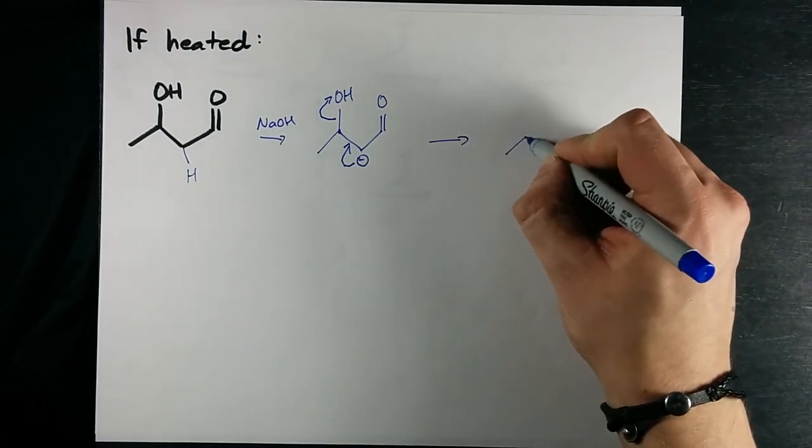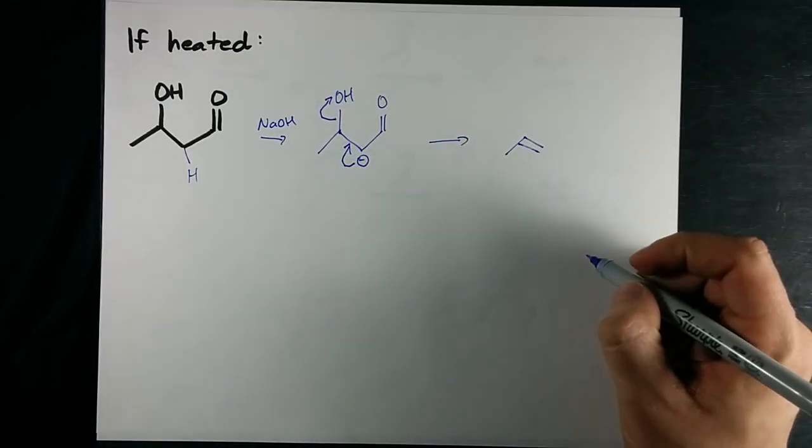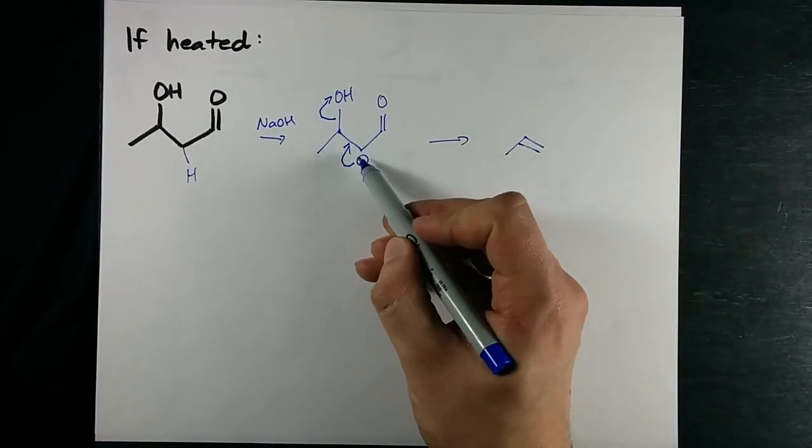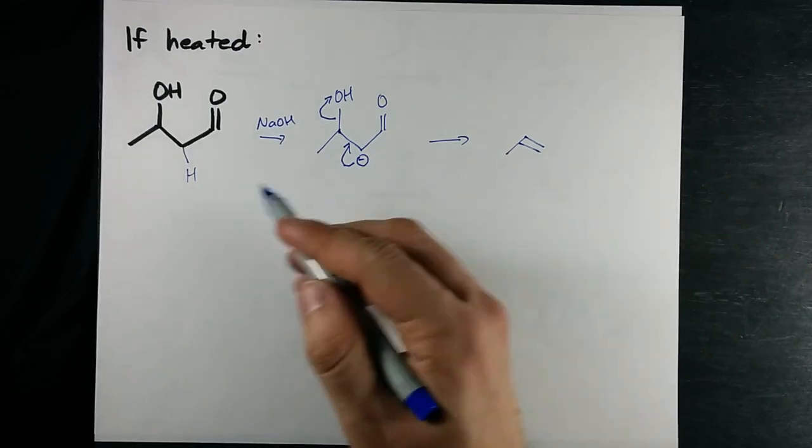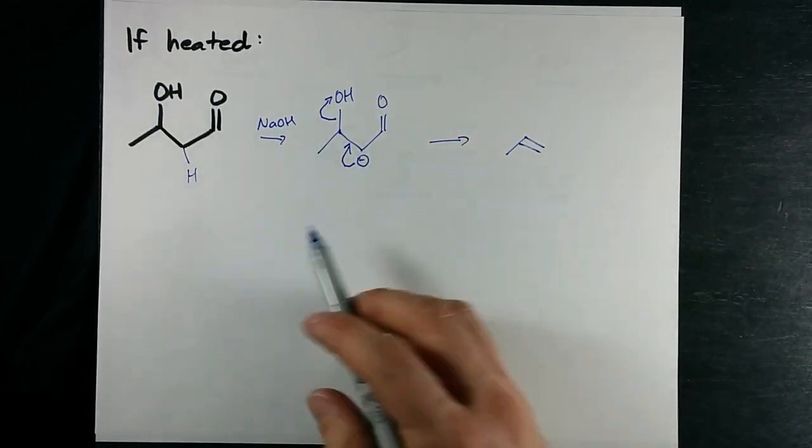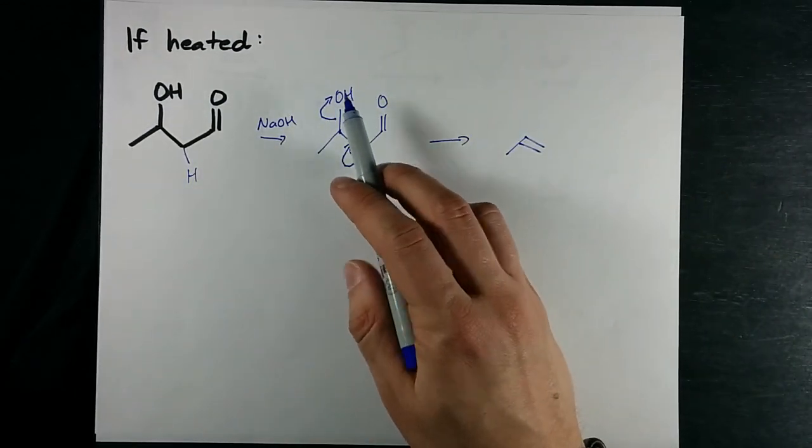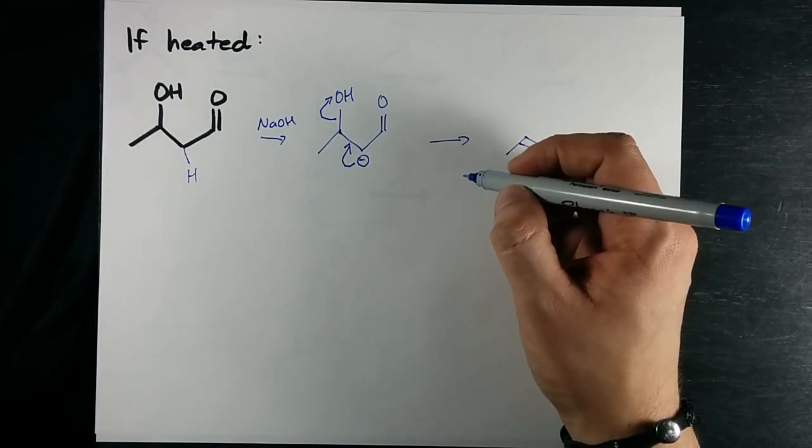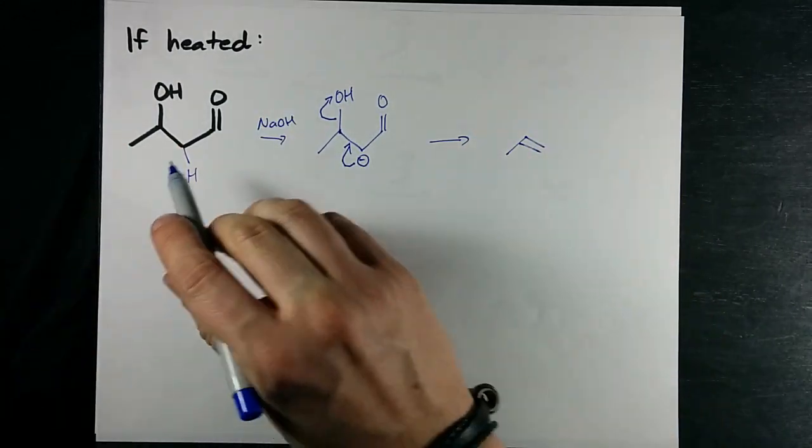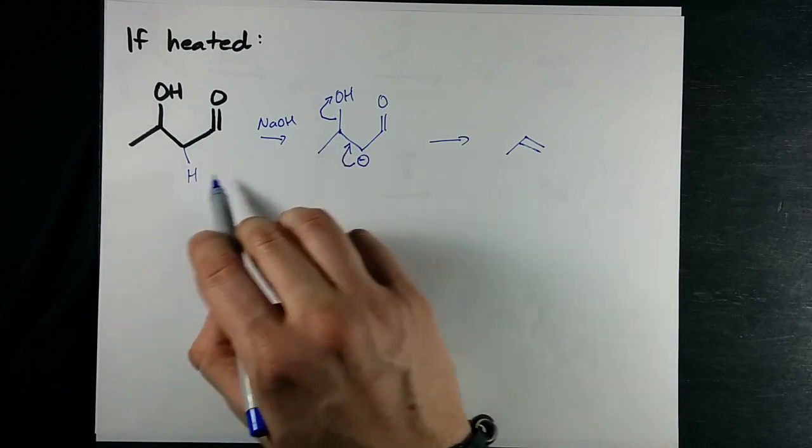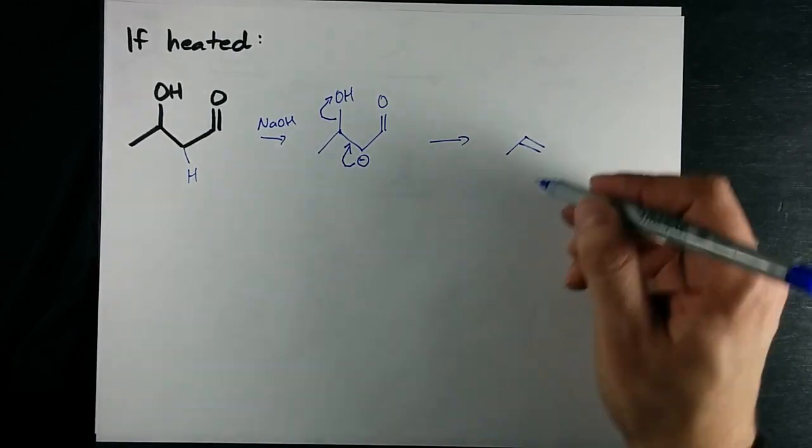And I've done an elimination reaction to form a double bond between these two carbons. What I really did over the course of two steps was lose an H, lose an OH, and so really I've just eliminated water. But it happened in two steps because the NaOH deprotonated this first.